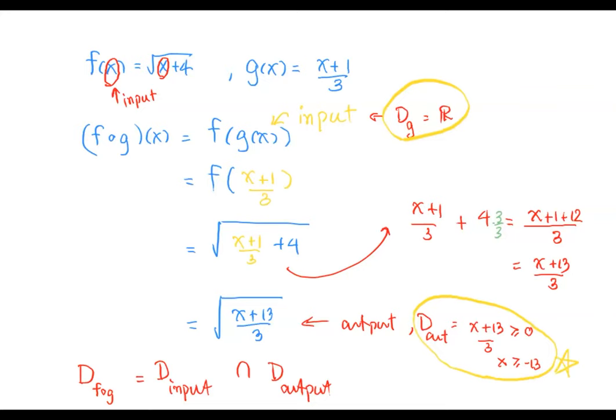So we write the answer: equals the set of x such that x is greater than or equal to negative 13, or we can write in interval notation as negative 13 comma infinity, including negative 13 with a closed bracket and open parenthesis for the infinity.